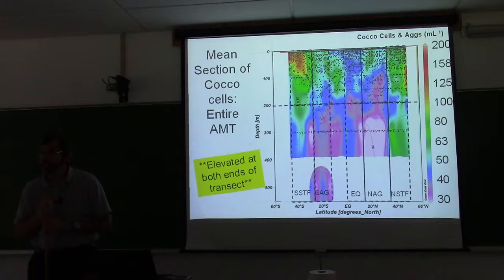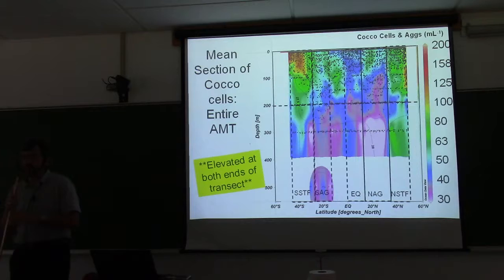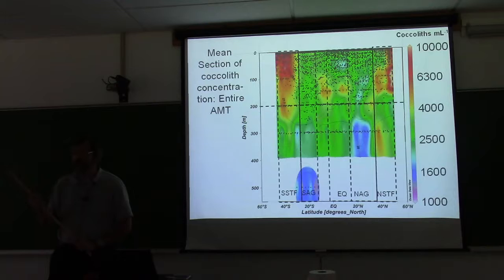Aggregates won't necessarily have the same size as a cell — and that's one of the ways we discriminate between birefringent detritus. So the big aggregates we wouldn't be including here. A cell of Coccolithus pelagicus might be 15 microns in diameter — we don't want to eliminate those. But there are no known coccolithophores at 100 microns, so we exclude those.